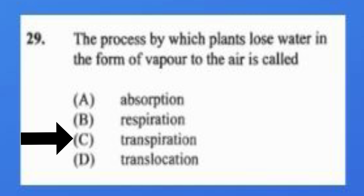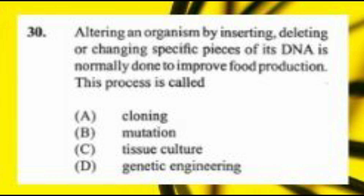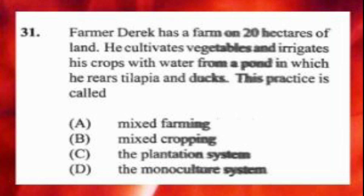Question number twenty-nine: the process by which plants lose water in the form of vapor to the air is called A) absorption, B) respiration, C) transpiration, D) translocation. The answer is C, transpiration. Question number thirty: altering an organism by inserting, deleting, or changing specific sequences of its DNA to improve food production is called A) cloning, B) mutation, C) tissue culture, D) genetic engineering. The answer is D, genetic engineering.